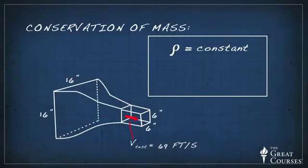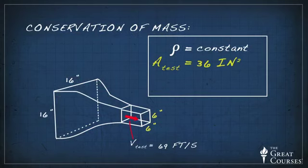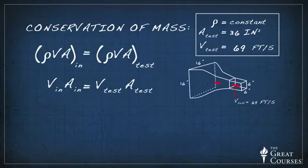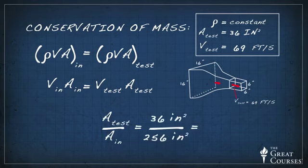With our wind tunnel here, for example, the test section area is 36 square inches. And we just measured the airspeed in the test section at 69 feet per second. What if we want to find the velocity up here, ahead of the contraction? Based on the conservation of mass, we know that it's going to be lower, since the cross-sectional area is higher. Since the upstream area is 256 square inches, or 7.1 times larger, the flow velocity here is 7.1 times lower, or a mere 9.7 feet per second.